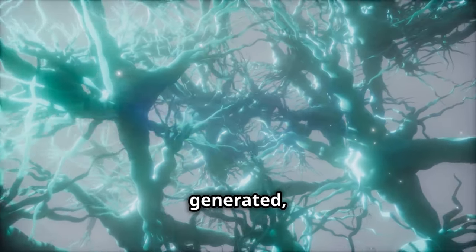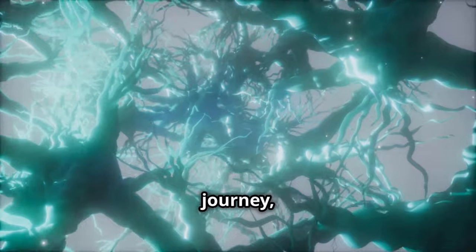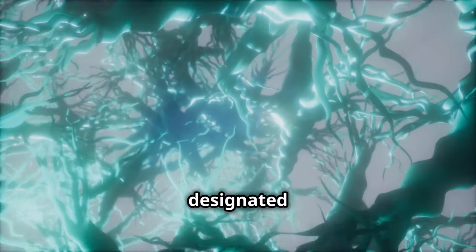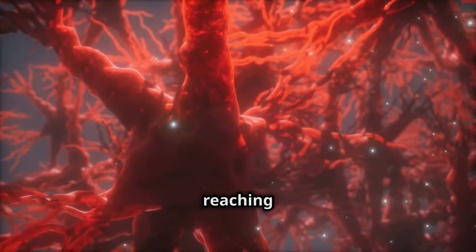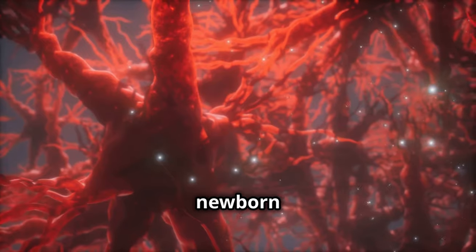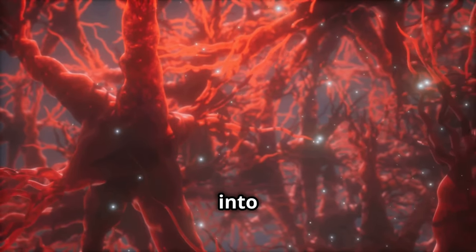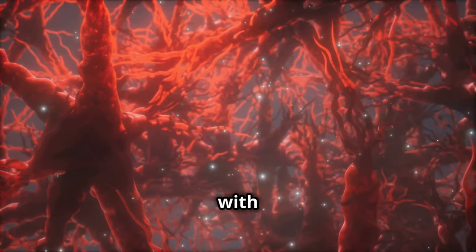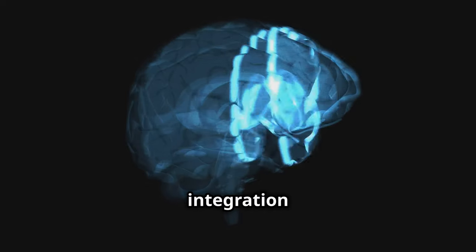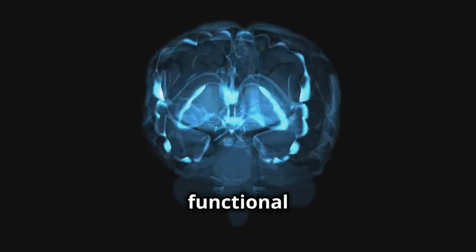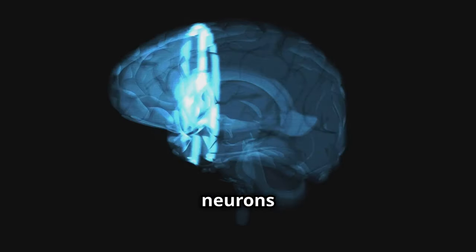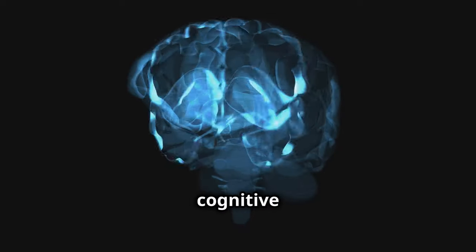Once new neurons are generated, they embark on a remarkable journey, migrating to their designated areas within the brain. Upon reaching their destination, these newborn neurons begin to integrate into existing neural circuits, forming connections with neighboring neurons. This integration process is essential for the functional maturation of new neurons and their ability to contribute to cognitive processes.